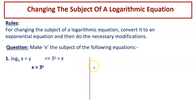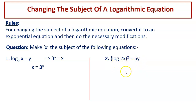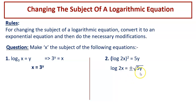Coming to question number 2: log of (2x) whole raised to the power of 2 equals 5y, and we have to make x the subject. We take the square root of both sides first. So it is log 2x equal to plus or minus the square root of 5y, giving us two cases: positive square root of 5y or negative square root of 5y.